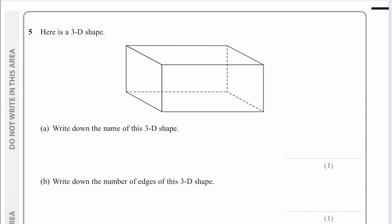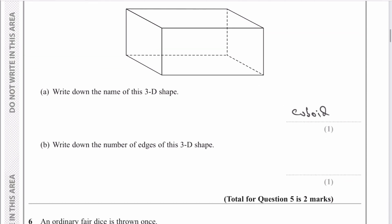Question five: write down the name of this 3D shape. It's actually going to be called a cuboid, or some people would call it a rectangular prism. Write down the number of edges — just be very careful: the edges are these sides here. There are four at the top, four at the bottom, which is eight, and then four around each side, so there are actually 12 edges altogether. Sometimes it'll say edges, sometimes it might say vertices, which basically means the corners.